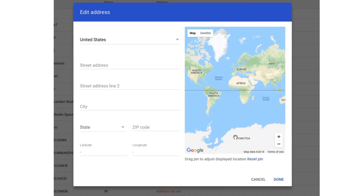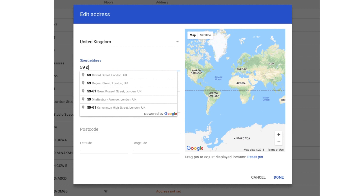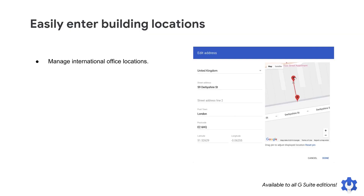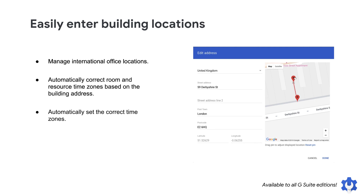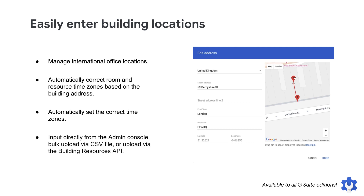You can now input addresses instead of latitude and longitude coordinates to enter the location of your office buildings in the admin console. This is a more efficient and reliable way for you, as a G Suite admin, to manage international office locations. Adding address information immediately unlocks automatic correction of room and resource time zones based on building address. We'll now automatically set the correct time zones for all resources in these buildings and help ensure you see accurate usage by time of day in the Room Insights dashboard. Address information can be inputted either directly from the admin console, bulk upload via CSV file, or upload via the Building Resources API. For more information, see the Help Center.